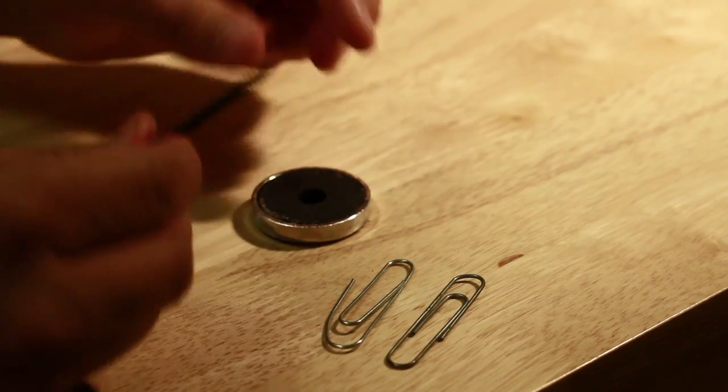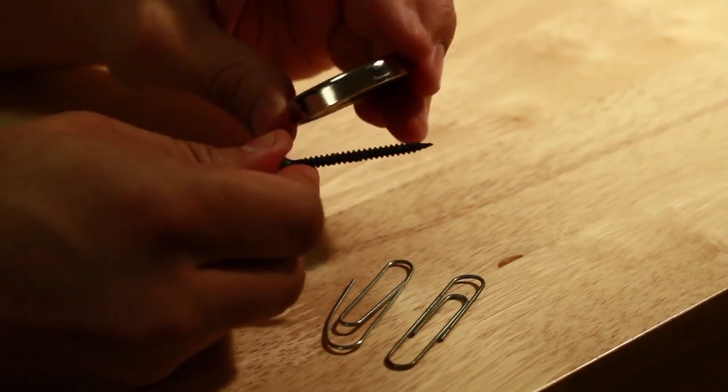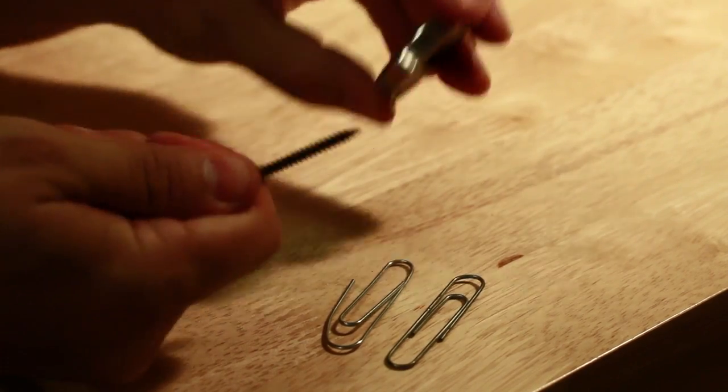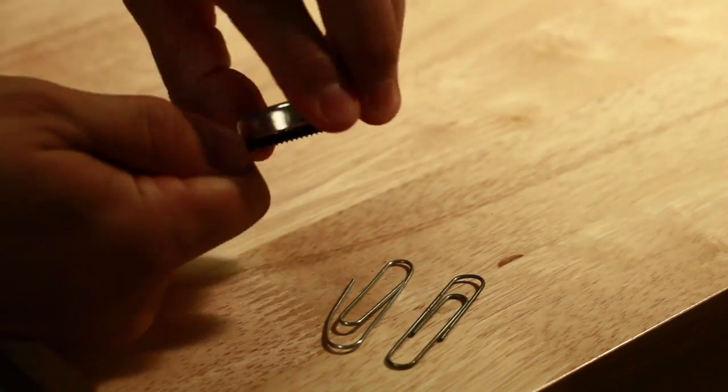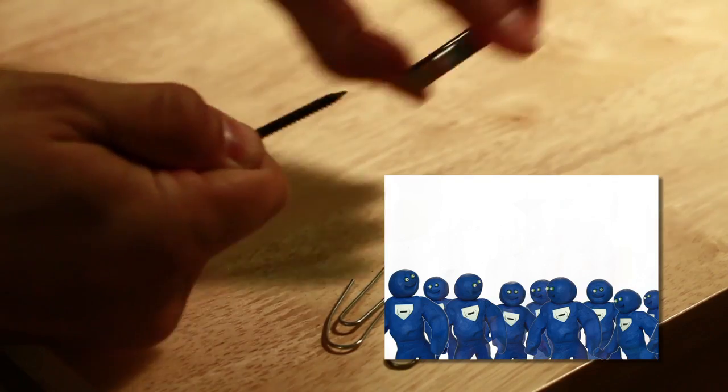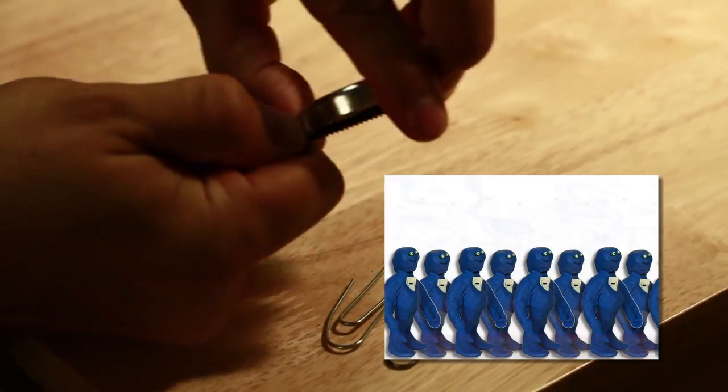Now all we have to do is begin to stroke the screw with the magnet in the same direction. What we are basically doing is causing the electrons in the screw to realign parallel to each other.